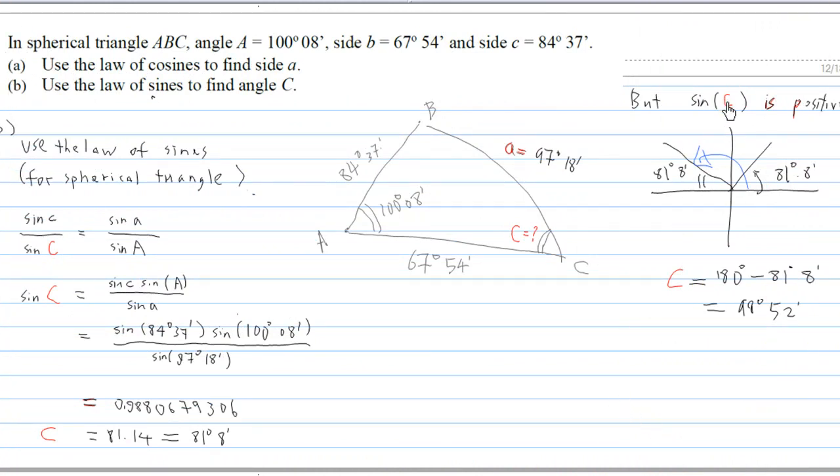As we know that sine C is positive, there is another possibility where angle C is. Because the first quadrant angle is 81 degrees 8 minutes, there is another angle in the second quadrant: 180 degrees minus 81 degrees 8 minutes, which equals 98 degrees 52 minutes.